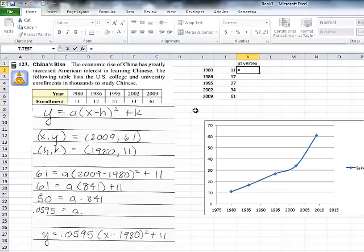So it's going to be equal to 0.0595 times, and then around here it's x minus 1980 squared. So it's times the quantity, and now for our x, we're going to use this 1980 minus 1980, end parentheses.